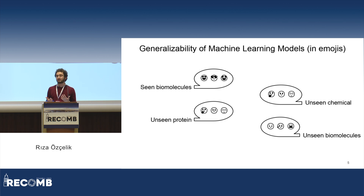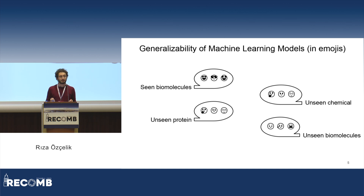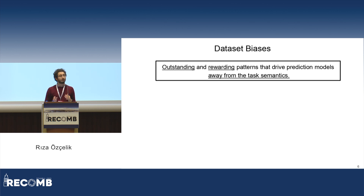These cases are actually very relevant for drug discovery. For instance, when you are designing a novel chemical, you are exactly in the realm of unseen chemicals — since it's novel, you have no training data for it. If you are working on a rare disease with novel proteins, you are in the realm of unseen proteins. And if you are doing both at once, you are stuck with models that predict almost random things. So we need to fix that.